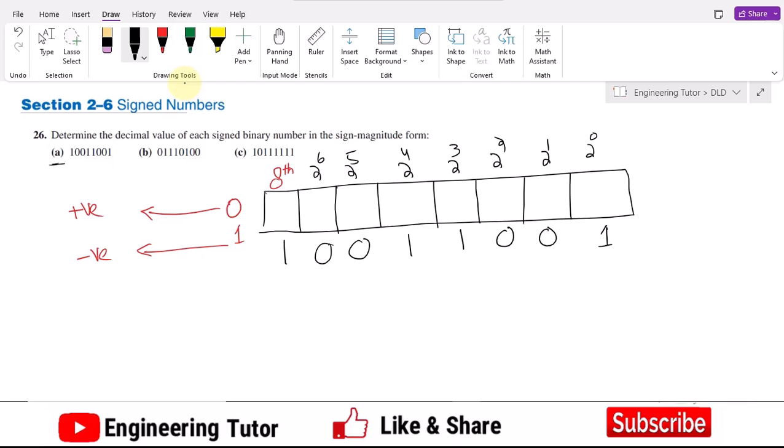2 raise power 5 and 2 raise power 6 while this is a sign bit. So this sign basically represents that this is a negative number.